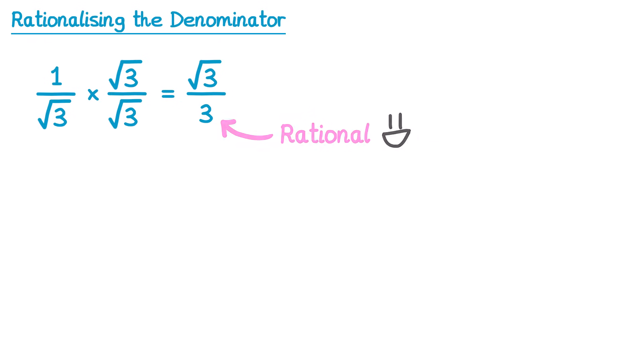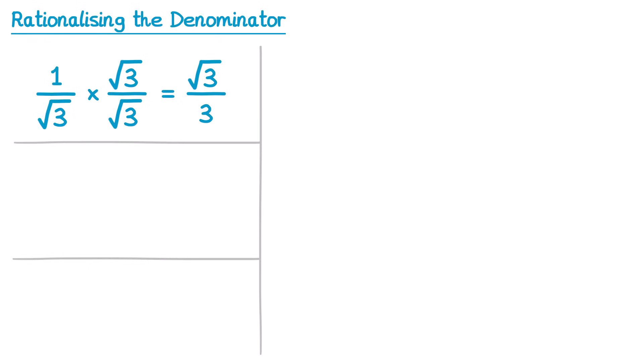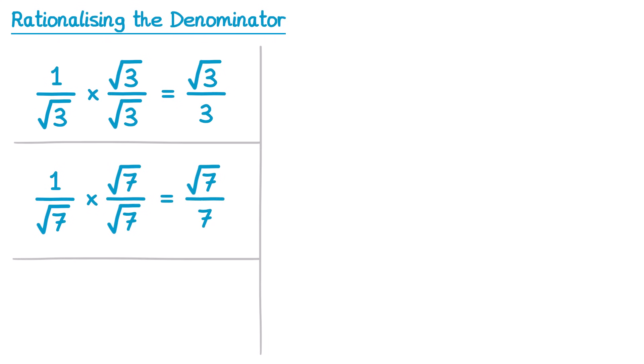Let's try another example. So let's try 1 over square root 7. We're going to multiply this on the bottom by square root 7, and on the top by square root 7. On the top we do 1 times square root 7, that's square root 7, and on the bottom, square root 7 multiplied by itself is 7. So 1 over root 7 is the same as root 7 over 7.